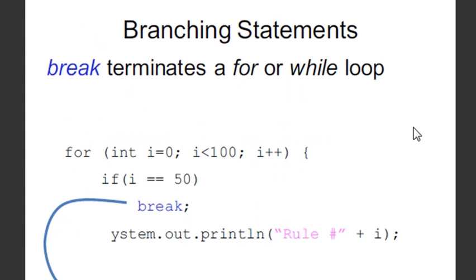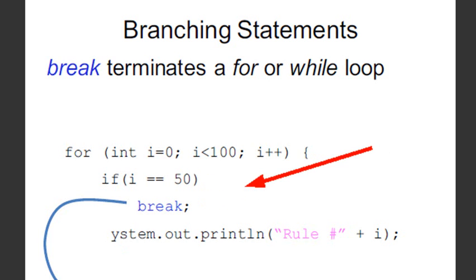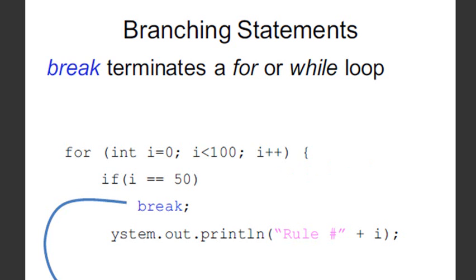There are two very important statements: break and continue. Break terminates a for loop or a while loop. You can be going through 100 iterations waiting for a condition to be met — for example, if it's 50, break out of the entire loop and stop. A practical example: if you have 5,000 names and you're searching for Mike Lively, as soon as you hit that name you don't want to keep iterating. You want to break — stop searching because you found him. That's a perfect use for break. You've also seen break already in switch statements, so it's a useful mechanism in programming.